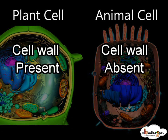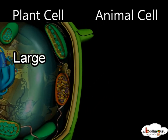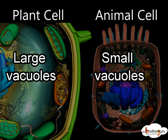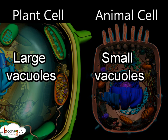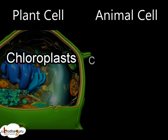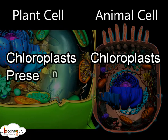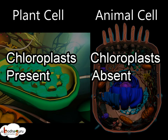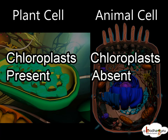Plant cells possess a cell wall while animal cells do not. Plant cells possess large vacuoles while animal cells have many small vacuoles. Chloroplasts are present in plant cells while animal cells do not possess them.